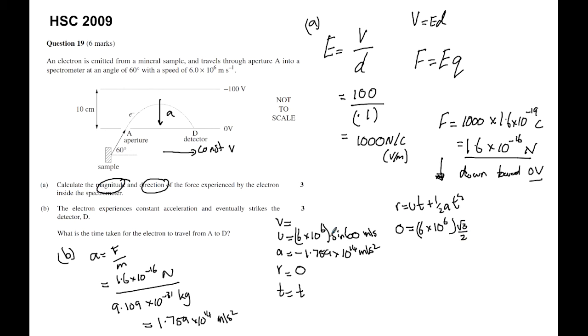That is equal to, then we have a t, which is our time, and then we have plus a half a t squared. So that's a half by a, which is negative 1.759 by 10 to the power of 14, multiplied by t squared. You can just squeeze it on there.